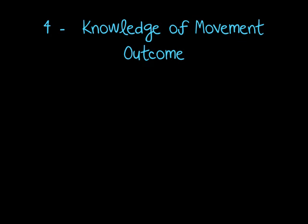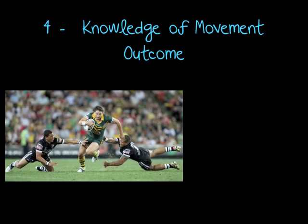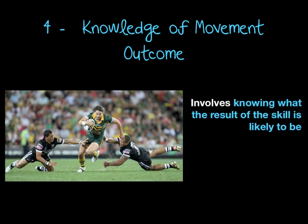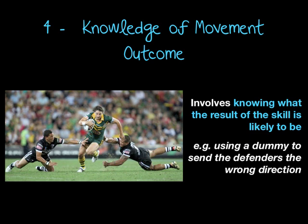The last memory item is knowledge of movement outcome. Here we have a rugby league game in Australia. Knowledge of movement outcome involves knowing what the result of a skill is likely to be — what happens when I do that skill? Here, the rugby league player has used the dummy effectively to send two defenders the wrong direction. The player throwing the dummy must know that the dummy is going to do that, and then they will accelerate into the space created. Through knowledge of movement outcome, he knew what that dummy would do — what the outcome of the skill would be.